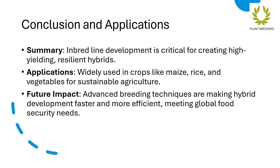Inbred line development is critical for creating high-yielding, resilient hybrids. It is widely used in crops like maize, rice, and vegetables for sustainable agriculture. Advanced breeding techniques are making hybrid development faster and more efficient, meeting global food security needs.